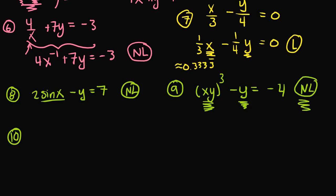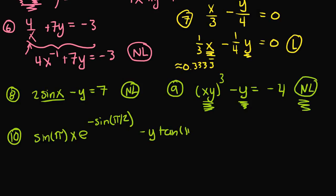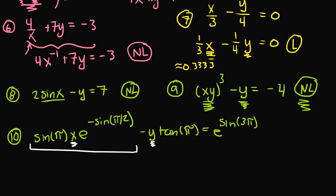And finally, example 10 — our last example, and a bit of a long one. The equation is: sine of π, times x, times e to the negative sine(π/2), minus y times tangent of π, equals e raised to the sine(3π) power. Our variables are x and y, and there's a whole lot going on — trigonometric terms like sine and tangent, the constant e, and π.